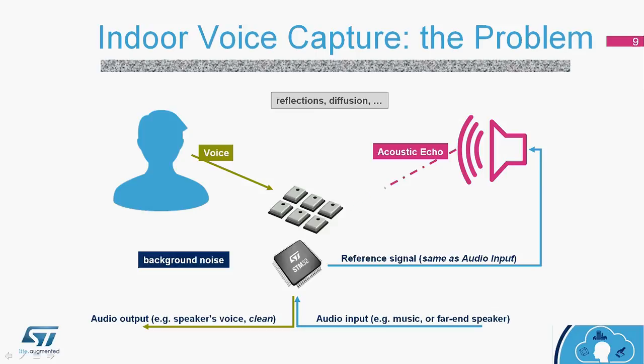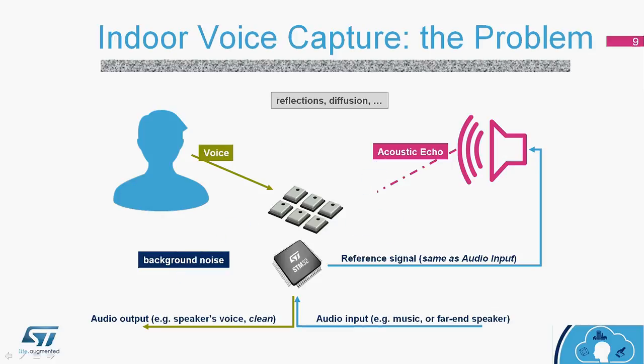The audio coming from the loudspeaker will also reflect against the walls of the room, intensifying the diffusion effect and the noise surrounding the audio capture system. Finally, there will be some background noise, which could come from an open window, traffic outside, a washing machine, and a number of different factors. This is our problem — we need to figure out how to improve the acoustic performance of the audio capture system.